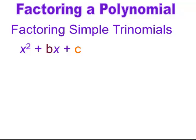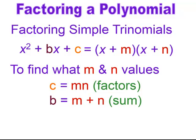Now we'll work with factoring simple trinomials. What makes them simple trinomials is the coefficient in front of x² is 1 — you don't see it written, but it's there. They're going to factor into 2 binomials of the form (x + m)(x + n). To do this, take the factors of c — two things multiplied together — that will add up to the coefficient of x, your b value. You're always looking for factors of the last number that add up to b.